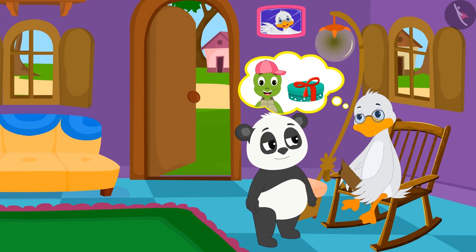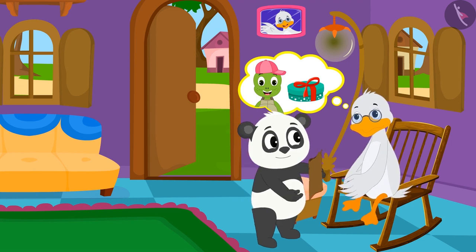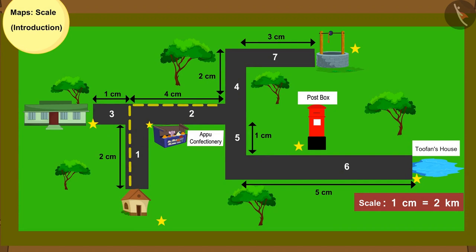Uncle gave Golu a map from his house to Tufan Tortoise's house, which was marked with a dotted line.